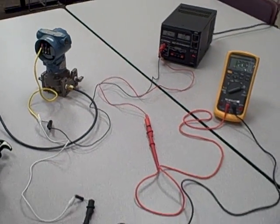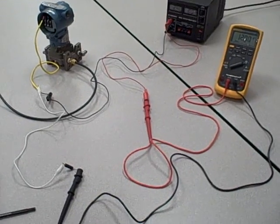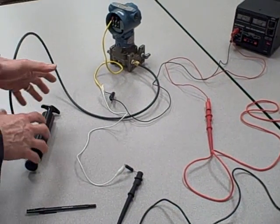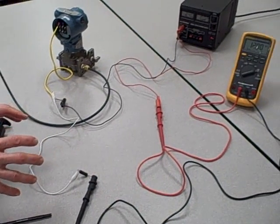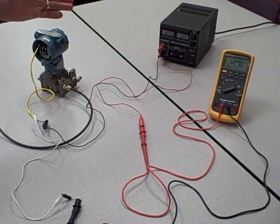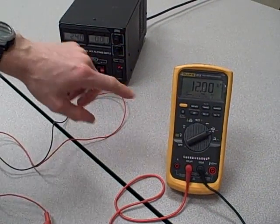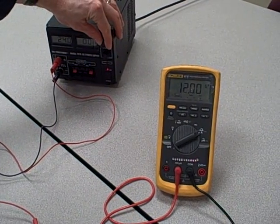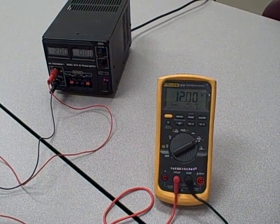What I'd like to demonstrate to you is how this current, this 12 milliamp current that we see, is dependent only on the amount of pressure we apply to the transmitter and is not dependent on other factors like loop resistance or power supply voltage. For instance, watch what happens when I begin to change the voltage here. It's now 24 volts, we have 12 milliamps. Watch as I decrease the voltage from 24 down to about 20. Notice the current doesn't change at all.